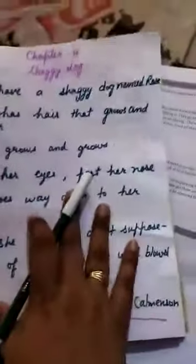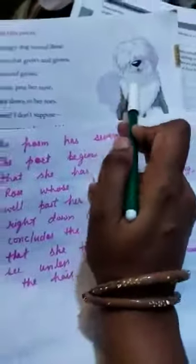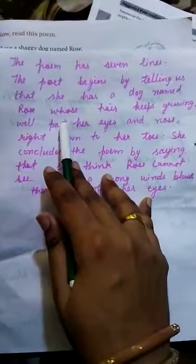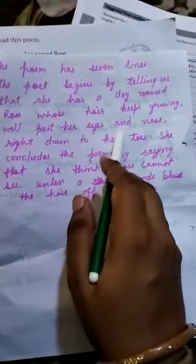Okay, this is a poem. In this poem we have seven lines and this is written by Stephanie Kalmanson. In this poem the poet begins by telling us that she has a dog named Rose, whose hair keeps growing well past her eyes and nose.